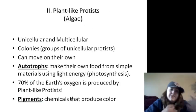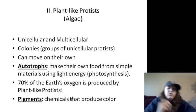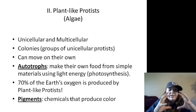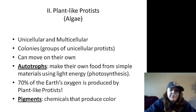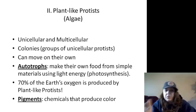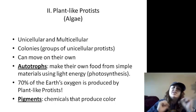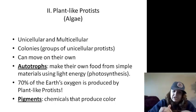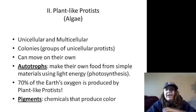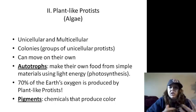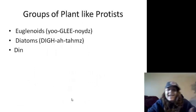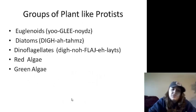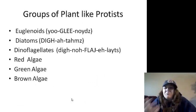Plant-like protists — algae. They can be unicellular, multicellular, or colonies. If it's a colony, it's made up of the same type of cell. They can move on their own and are autotrophs — they make their own food by photosynthesis. Seventy percent of the Earth's oxygen is produced by these organisms. They do have pigments which provide them colors. We've got euglenoids, diatoms, dinoflagellates, red algae, green algae, and brown algae.